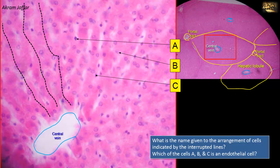The hepatocytes form an arrangement of plates or cords. These hepatic plates or cords are indicated by the interrupted lines. In between the cords there are sinusoids — wide vascular spaces, wide capillaries — which are lined by endothelial cells, a simple squamous epithelium. They have no basement membrane, which provides for better exchange.